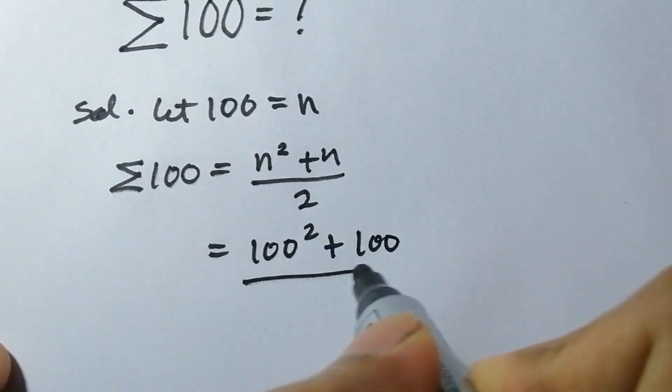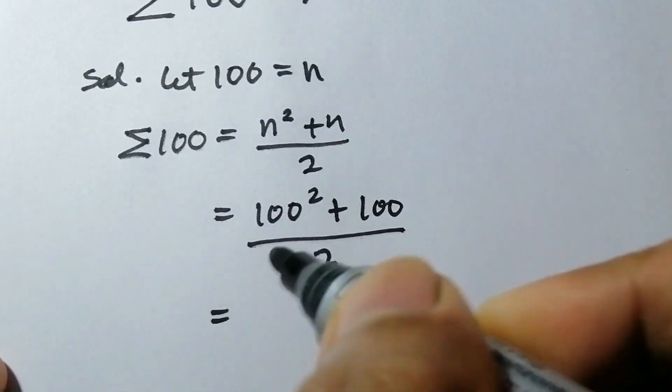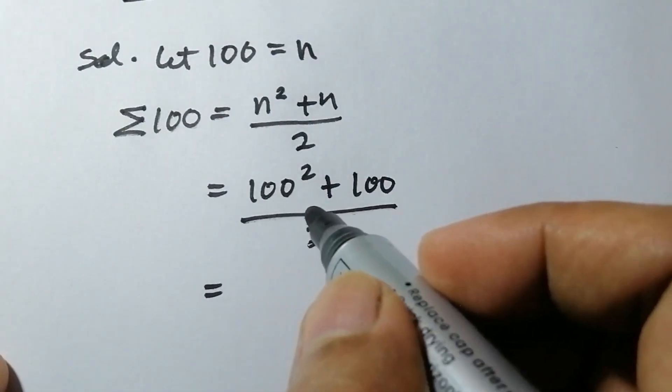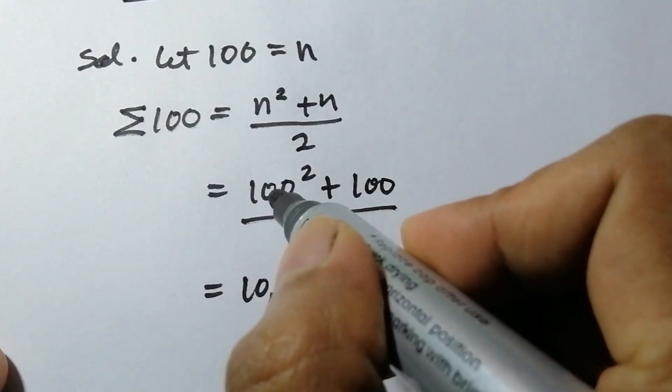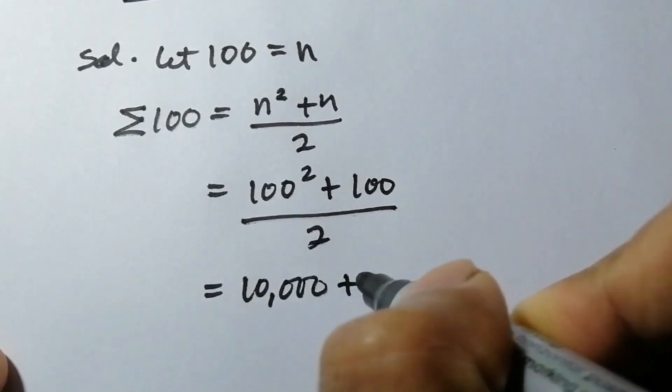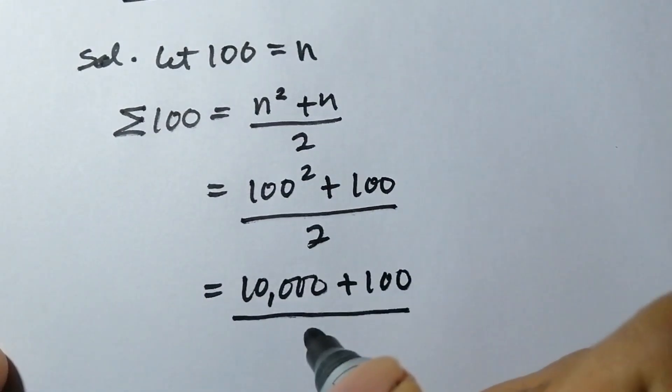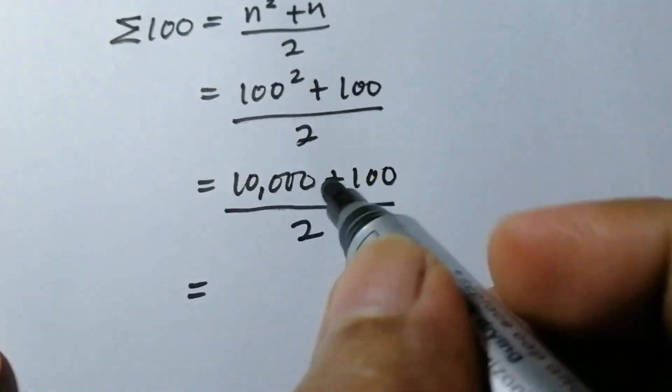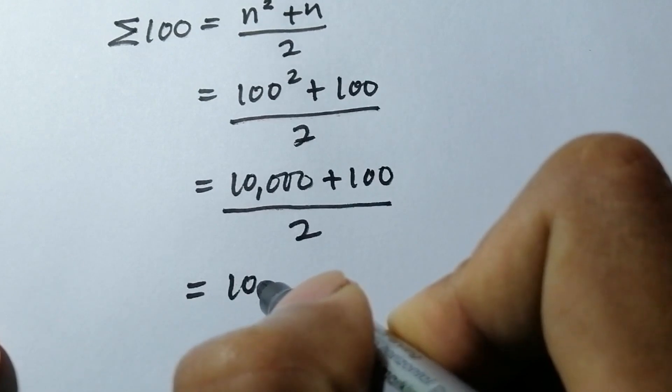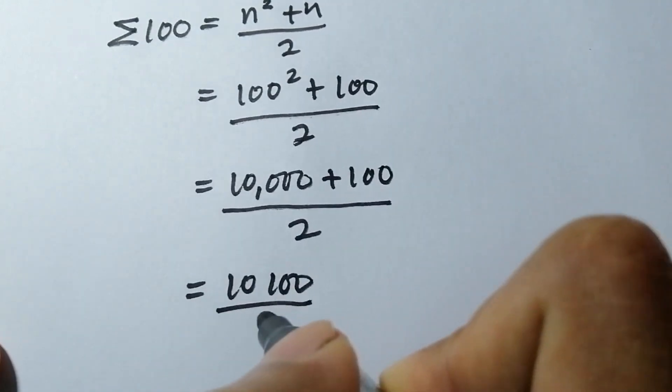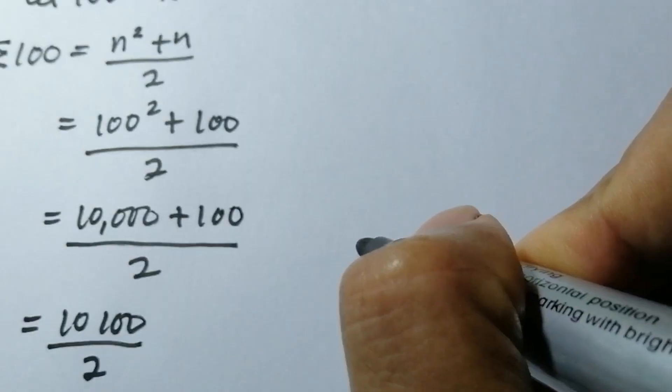This equals, so 100 times 100 is 10,000. The square of 100 is 10,000 plus 100 all over 2. And 10,000 plus 100 is 10,100 over 2.